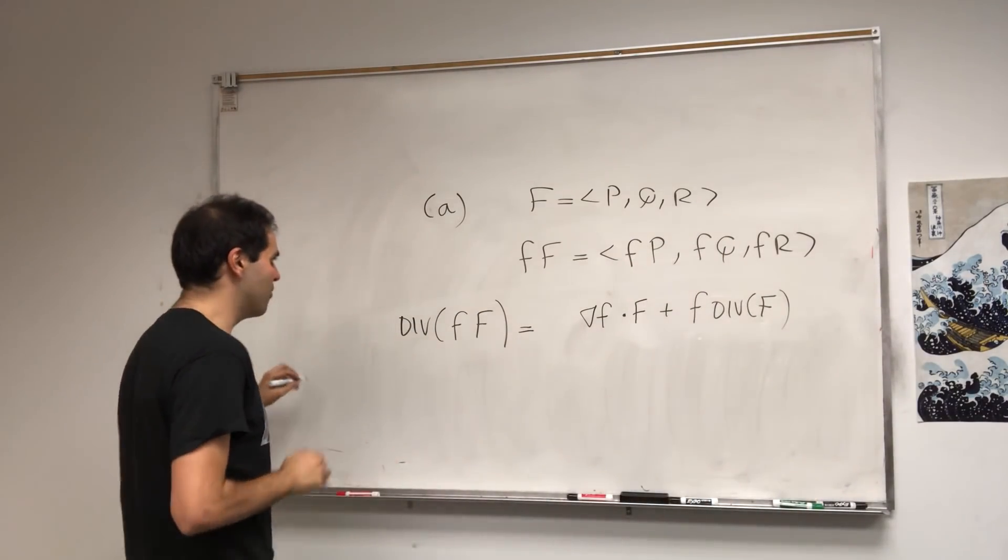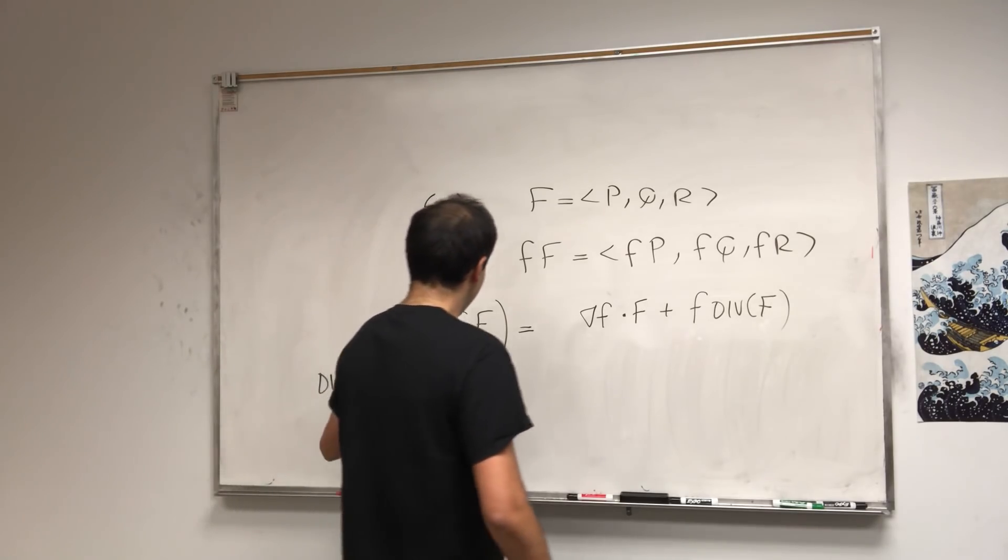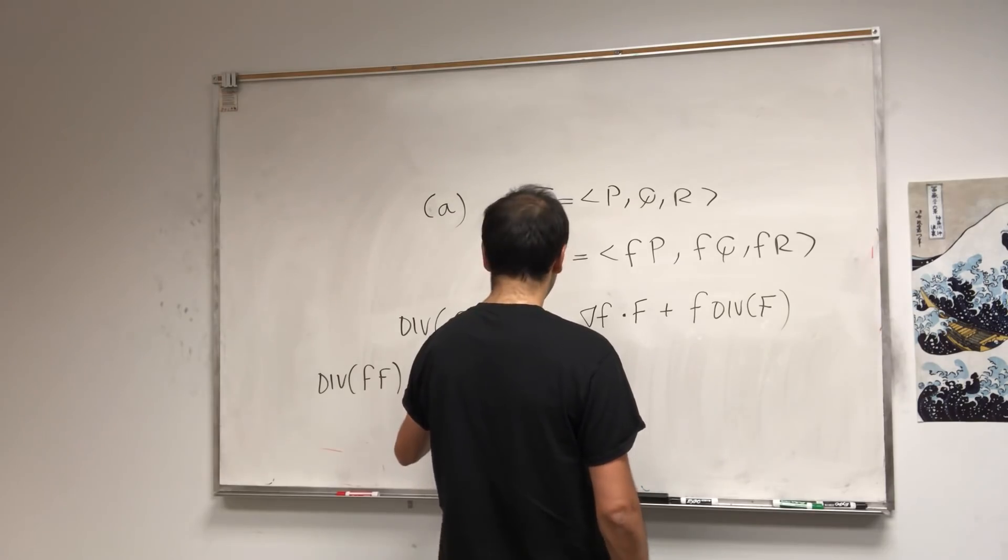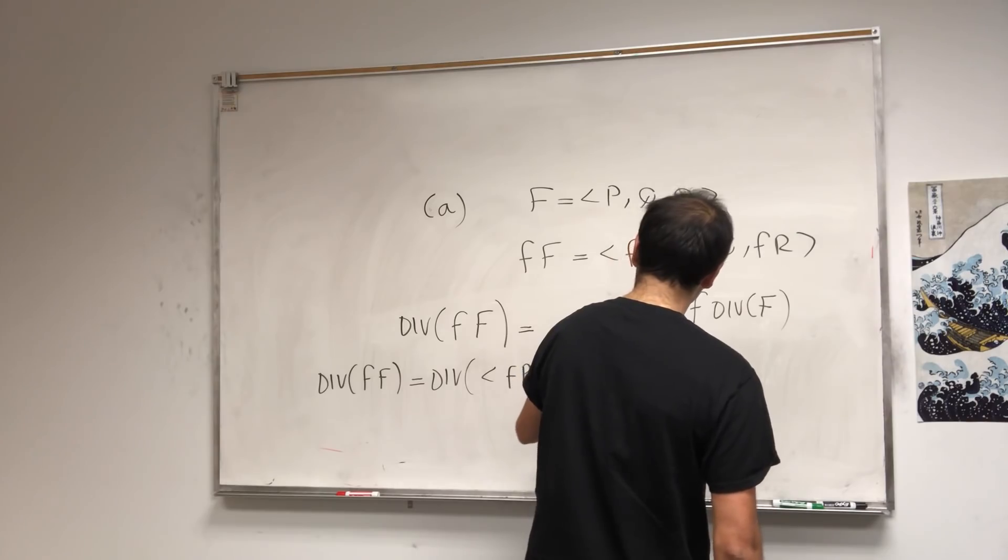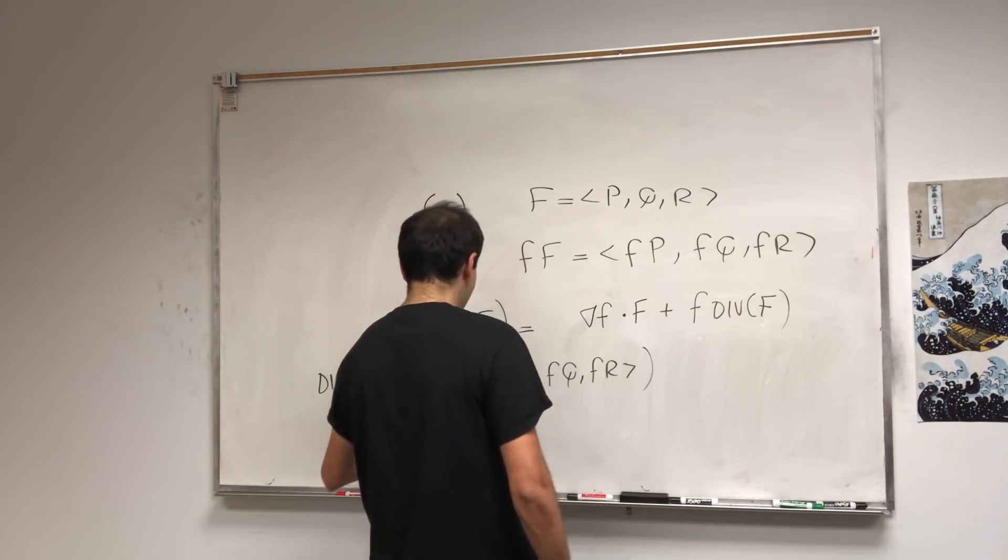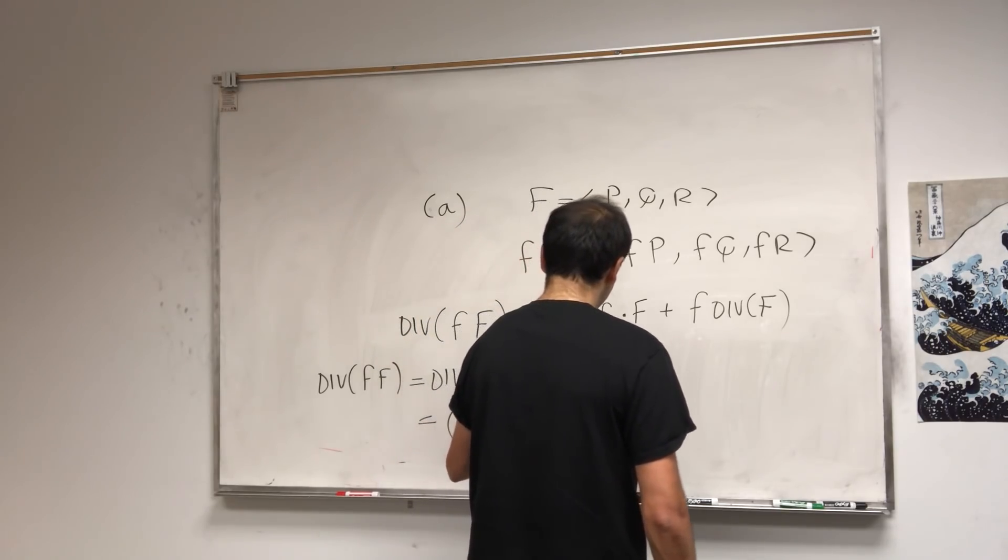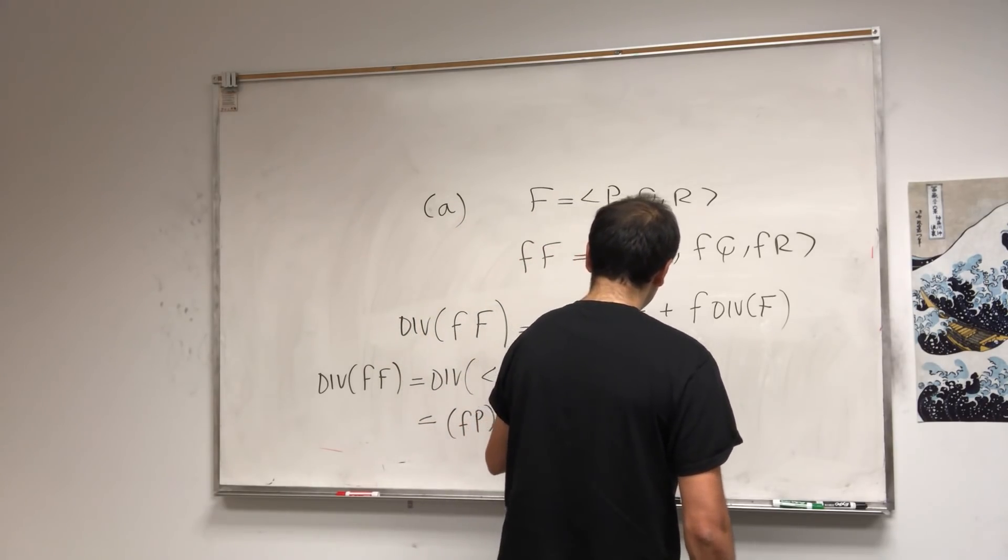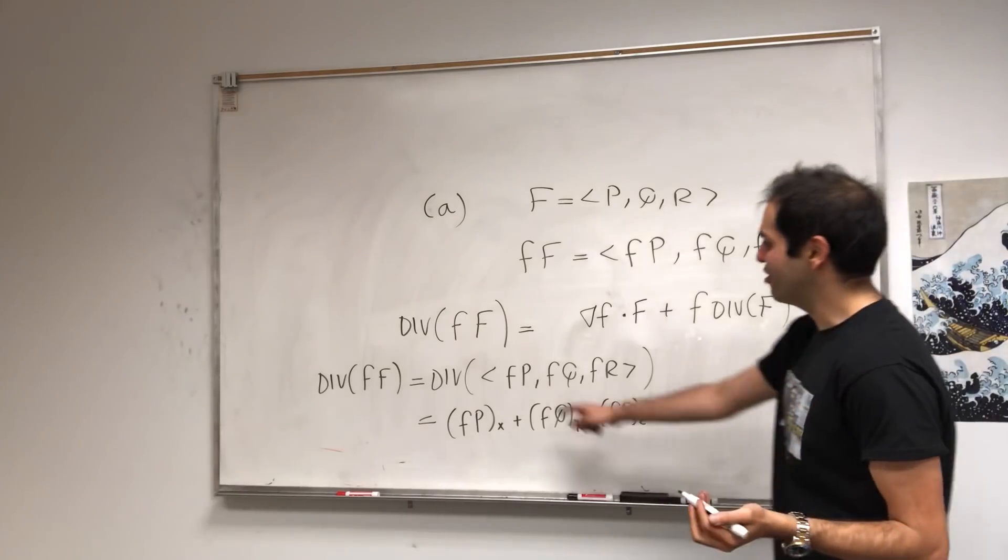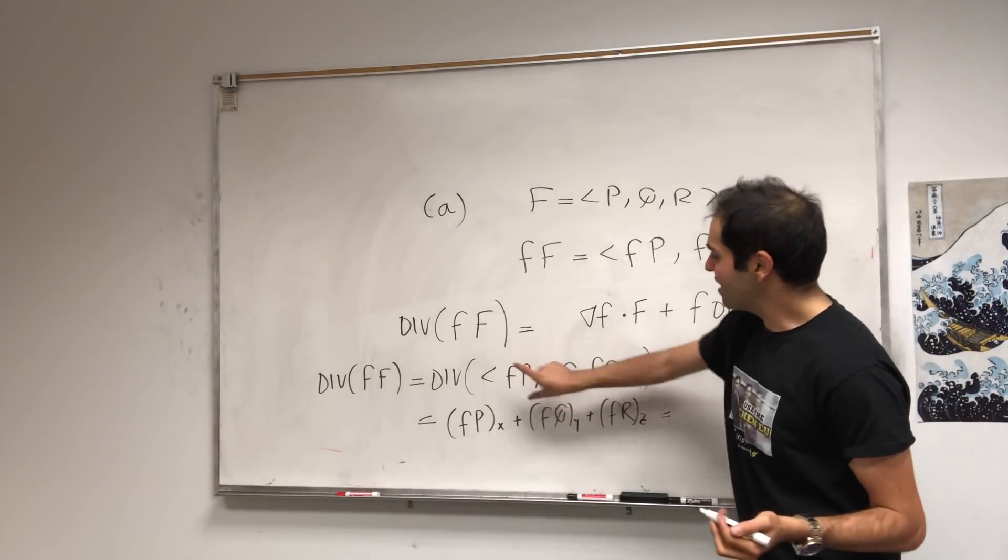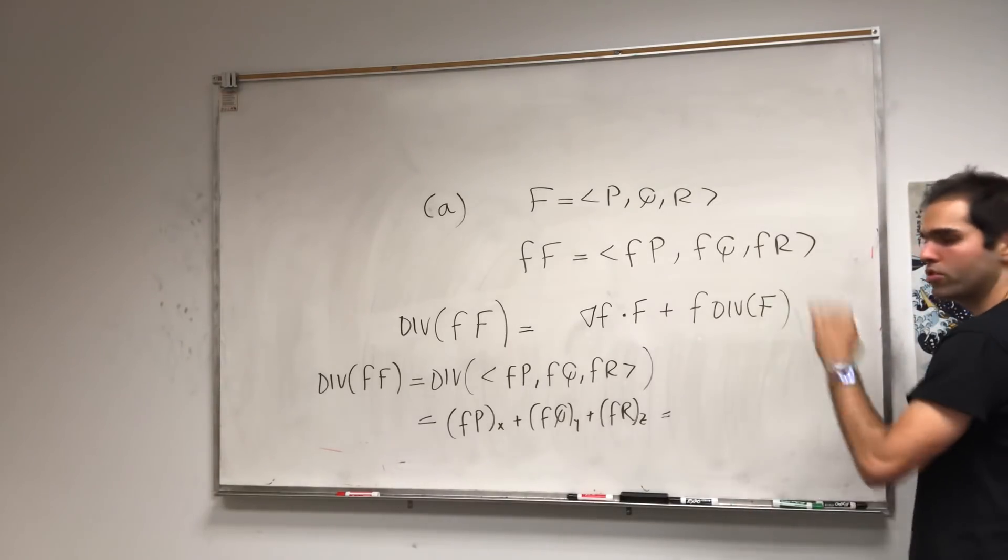This part people got. So that's not a problem, because the divergence of fF, that's the divergence of, again, fP, fQ, fR. And that is fP_x plus fQ_y plus fR_z. By the definition of a divergence, you just take the x derivative here, the y derivative here, the z derivative here, and you just sum it up.